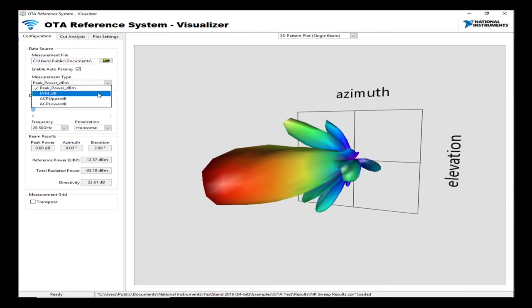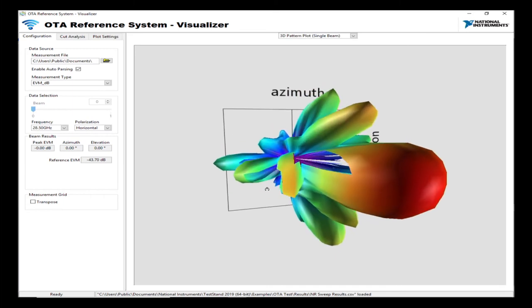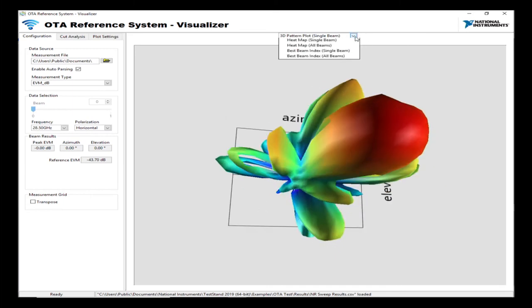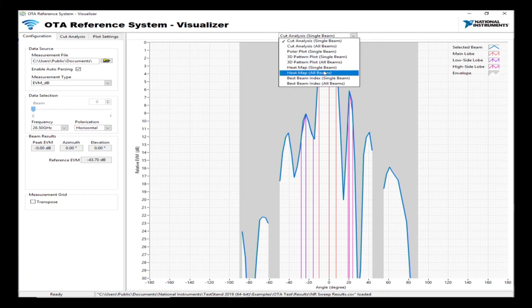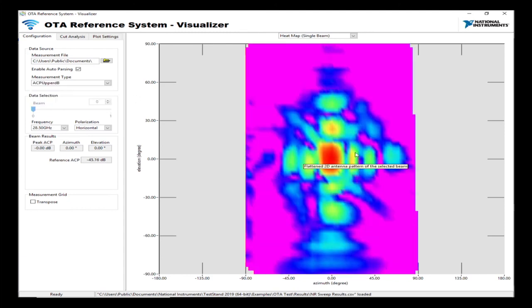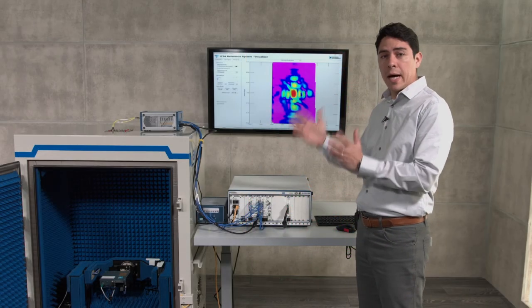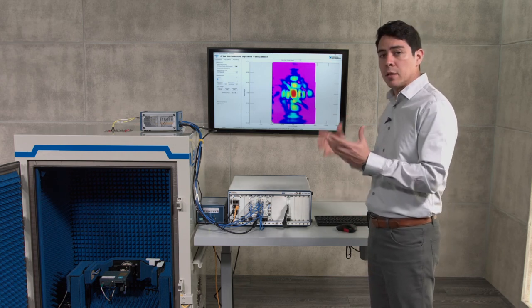And notice that there are some areas in this plot, some areas in which the signal-to-noise ratio is so low that I can't really compute an EVM number. I can also then switch to adjacent channel power, both for the upper and lower channel, in space. So one of the advantages of using the millimeter wave VST is that with the same instrument, I can do the sweep using high-bandwidth signals, 5G new radio signals, and get information that's more complete in a fraction of the time.